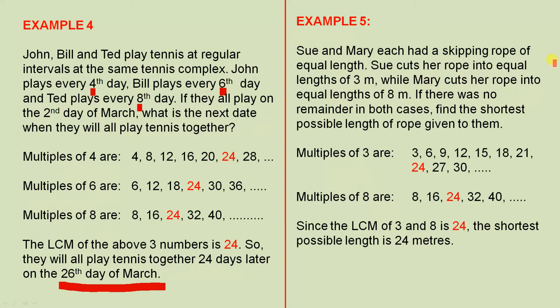Example 5. Here's another real world example. Sue and Mary each had a skipping rope of equal length. Sue cuts her rope into equal lengths of 3 metres, while Mary cuts her rope into equal lengths of 8 metres.